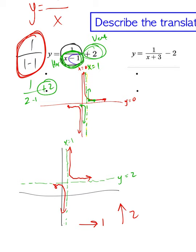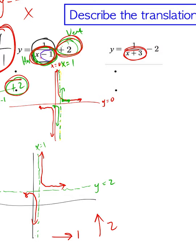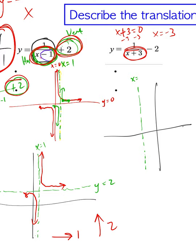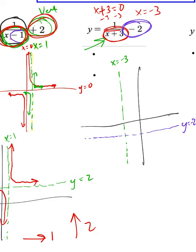Whatever happens in the denominator is a horizontal translation, and whatever is added or subtracted after the fraction is a vertical translation. For y equals 1 over (x plus 3) minus 2: what makes x plus 3 equal 0? That would be x equals negative 3, so the vertical asymptote has moved 3 units to the left. The minus 2 is a vertical translation — every y value moves down 2 units — so the horizontal asymptote is at y equals negative 2.